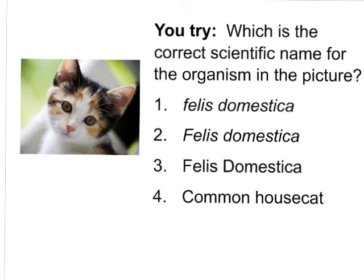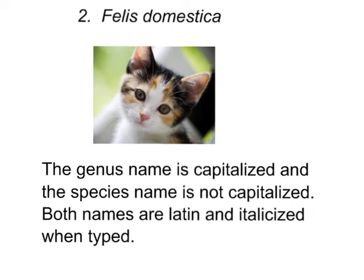Now you try. Here we have an adorable little organism — which is the correct scientific name for it? You can pause the video if you need to read all of the potential answers. The correct answer is Felis domestica — number two was the correct choice. We capitalize the genus name, lowercase the species name, and have the whole thing in italics. Both words are Latin; the species name 'domestica' essentially means domestic, which describes the organism.